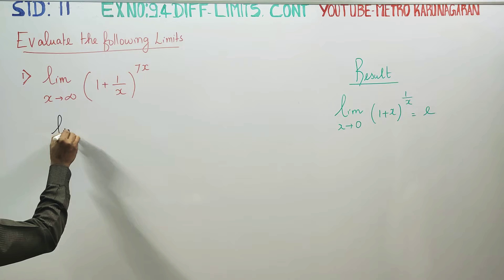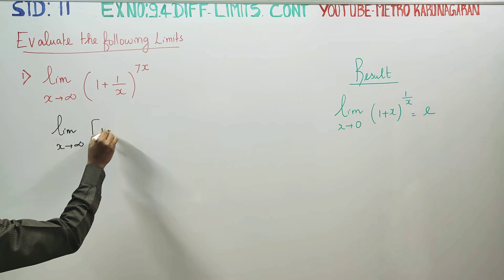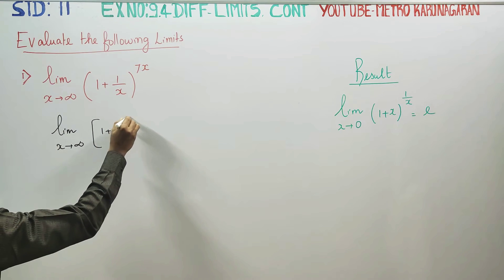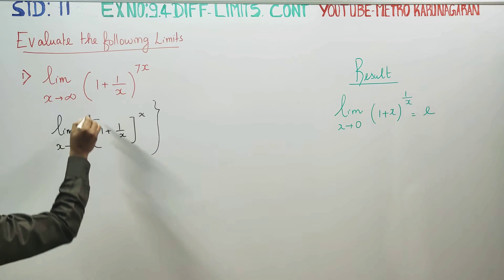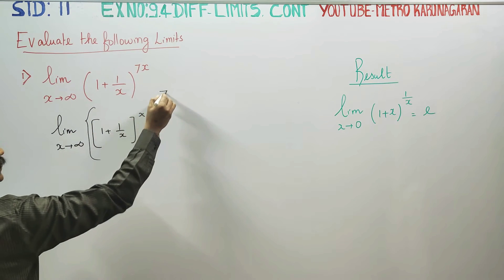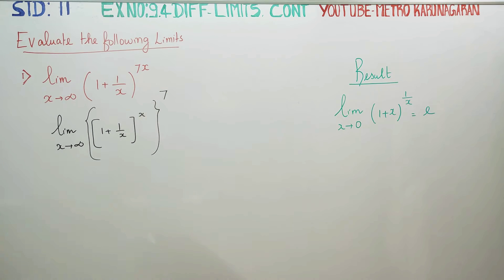Limit x turns to infinity (1 plus 1 by x) whole power x, whole power 7. If we see this, the power on top of power becomes 7 into x, which is 7x.